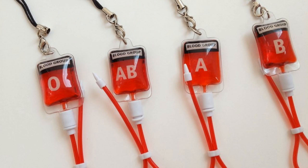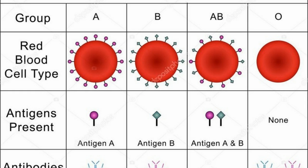Blood is composed of cells bathed in a fluid matrix called plasma. The cells constitute 45% by volume of the blood, while the other 55% is represented by the plasma.